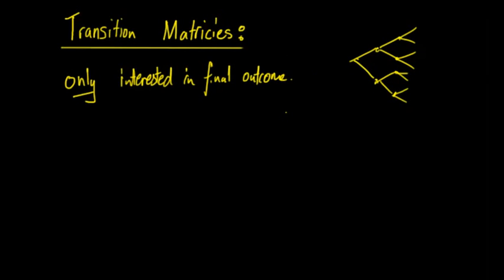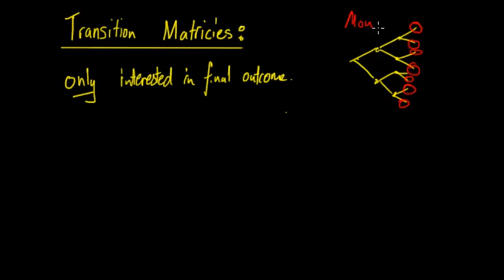Transition matrices are very useful and able to find the probability quickly at the end. For example, if this was Monday and this was Wednesday with ends like Tuesday and things in between,